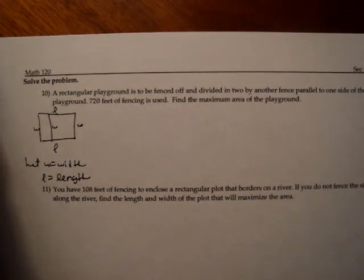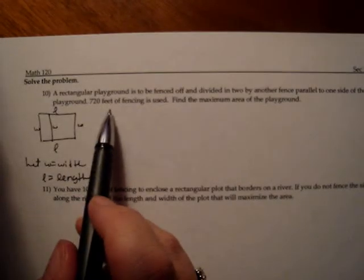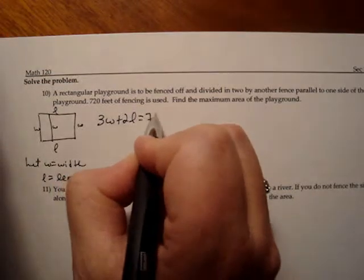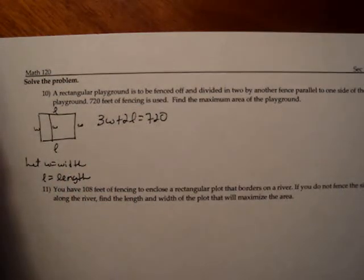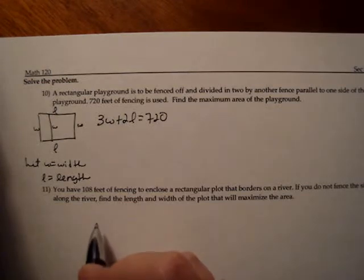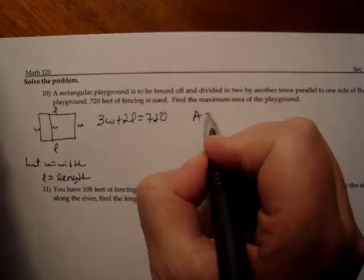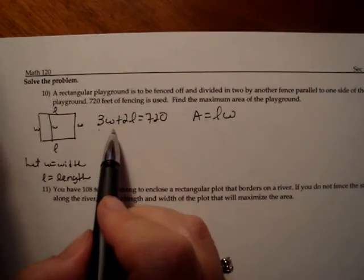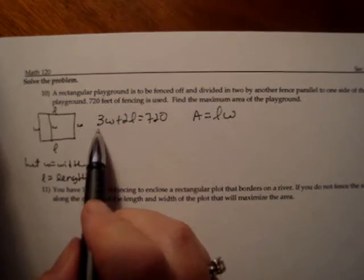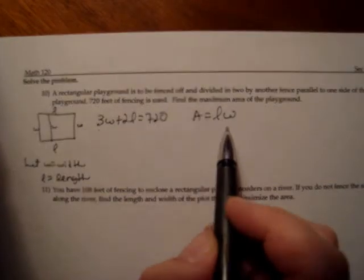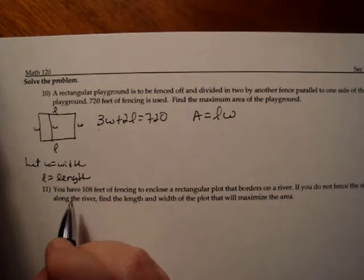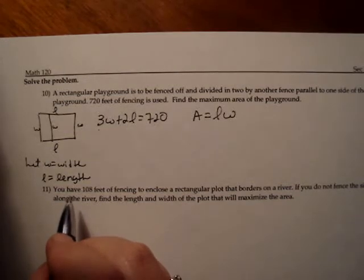I'm going to write the first equation that occurs to me, which is the one that has to do with fencing. There's 720 feet of fencing. So I know that 3w plus 2l equals 720. Then the next equation that occurs to me is find the maximum area. Area is length times width. Now what I'm going to do is take my equation that has to do with fencing, solve for either l or w, and substitute it into the area. This will become a function.